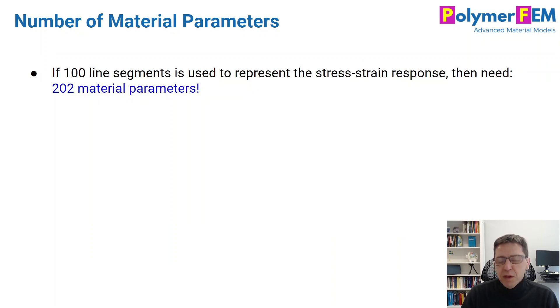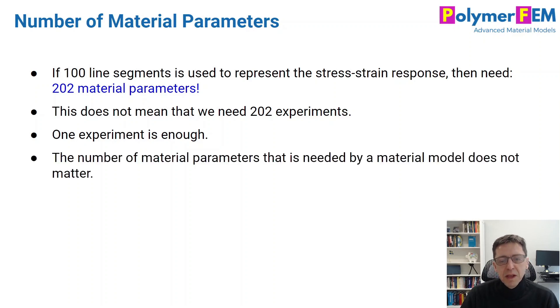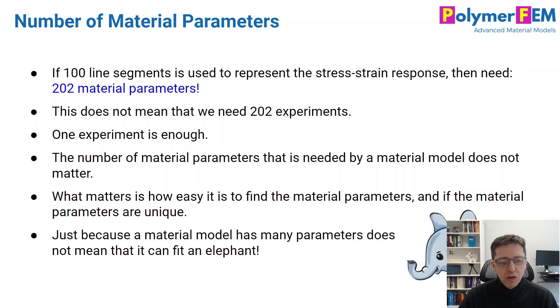A few things to keep in mind, though. If you use, say, 100 line segments to represent the stress-strain curve that you measure experimentally, that does not mean that you need to use 200 experiments, just because you have 200 material parameters. The number of material parameters is really independent of that. One experiment is enough. And I would also say that the number of material parameters that a material model needs, really, in general, has nothing to do with anything. I wouldn't care about that. What matters really is how hard it is to find these parameters. What kind of experiments do you need to use, and are the parameters unique? And finally, just because a material model has a lot of parameters, does not mean you can fit an elephant, which is the common statement that I hear.